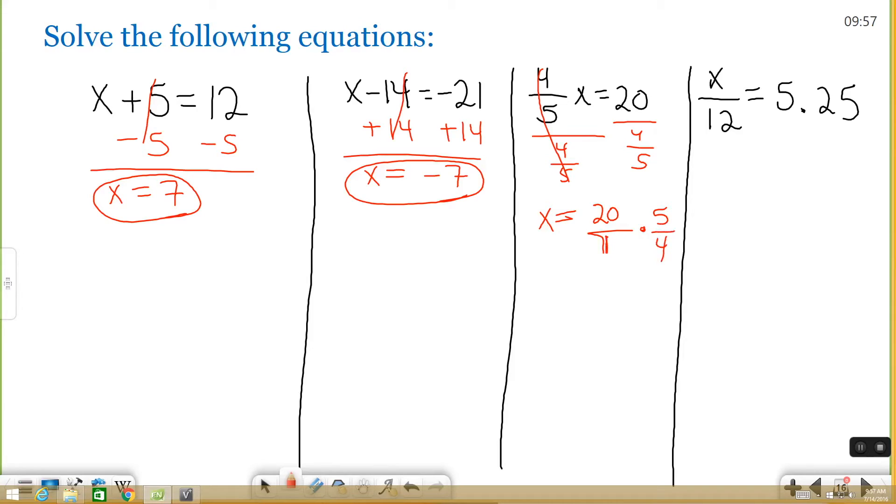And that's a 1 down there. Okay. So I've taken the 4 fifths, I've flipped it to make it 5 over 4, and now I'm going to multiply. When you multiply fractions, you go straight across. So 20 times 5 is 100 divided by 1 times 4, which is 4. You take 100 divided by 4, you get 25. And that's your answer.